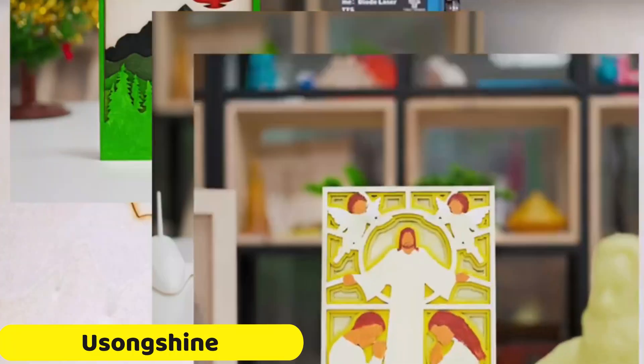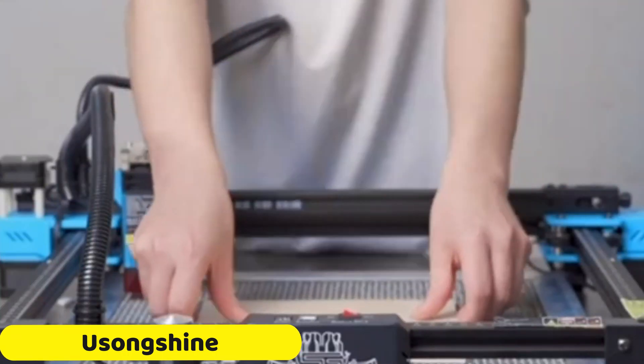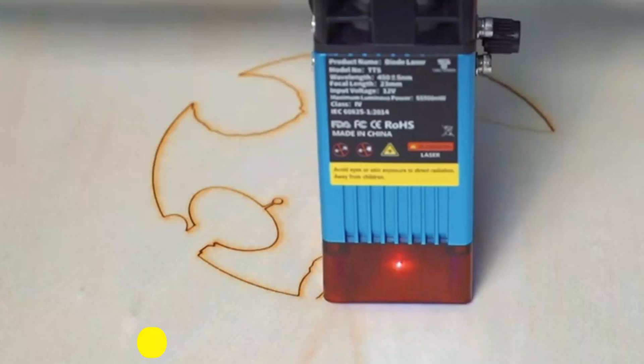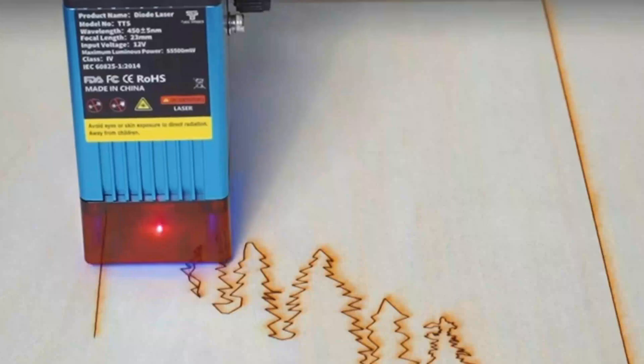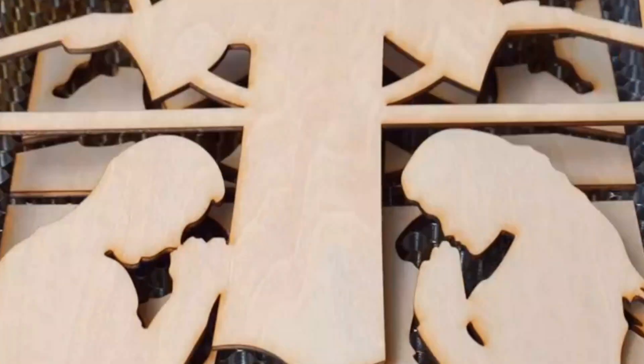Number 3: Usonshine Laser Engraver. The Usonshine Laser Engraver is a cutting-edge tool that allows users to bring their imaginations to life with precision and finesse. It features smart device integration, a versatile model range, CE certification, and multi-purpose functionality.